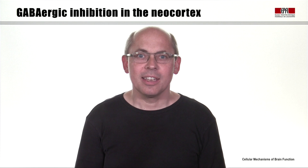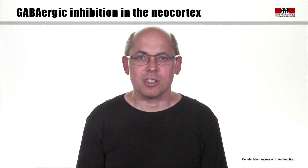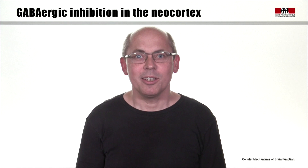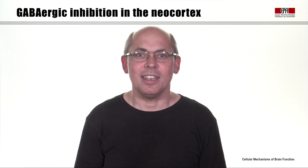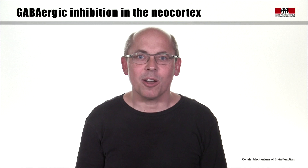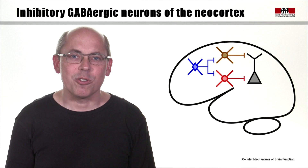In contrast to the long-range GABAergic projection neurons considered in the last video, many GABAergic neurons in the brain don't have long-range axonal projections. They have local axons that maybe stretch some hundreds of microns, and they're often termed GABAergic interneurons for that reason. They regulate the activity of the local microcircuits in which they're embedded.